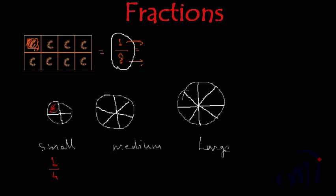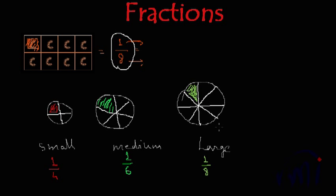If you eat this part of the small pizza, it is called one-fourth of the pizza. If you take the medium pizza and eat 1 piece, this will be called one-sixth of the pizza, represented as 1 by 6. Similarly, if you have a large pizza and eat one portion, this is represented as one-eighth of the pizza. The whole pizza is divided into 8 parts and you have eaten 1 part, so it is represented as 1 by 8. This is how we represent fractions when the object is divided into equal parts.